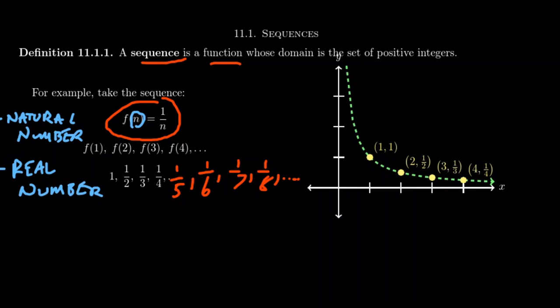Another thing we often do differently with sequences, instead of using this f of n notation, we generally will use a subscript of some kind. Like we might say a sub n equals one over n. Because again, we like to think of this idea of a sequence as a list of numbers. We have this a1, this a2, this a3, etc.